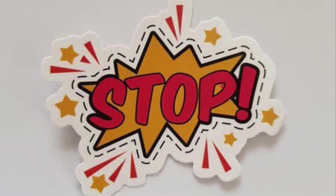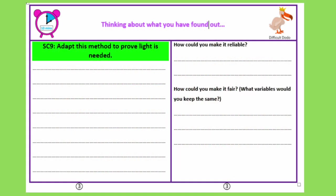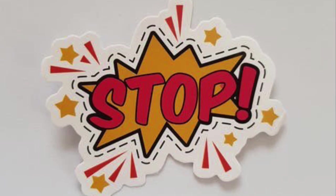We're now moving on to our purple box — the evaluation of our experiment. Ignore the left-hand side; I just want you to answer the two questions on the right-hand side. Do not move on — pause the video until you've answered the questions on the right-hand side of the purple box.